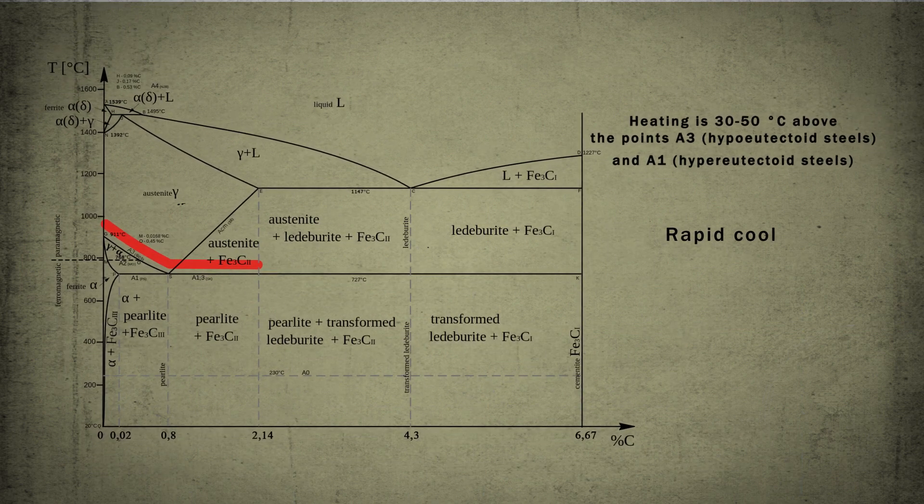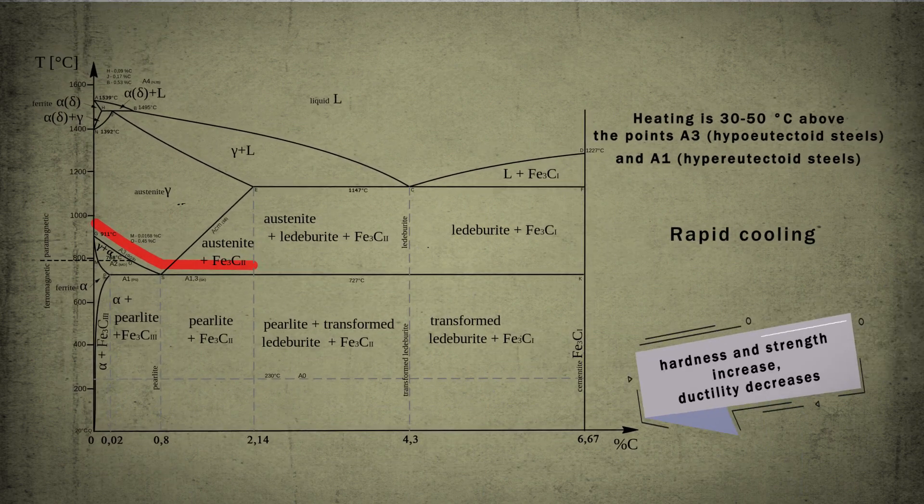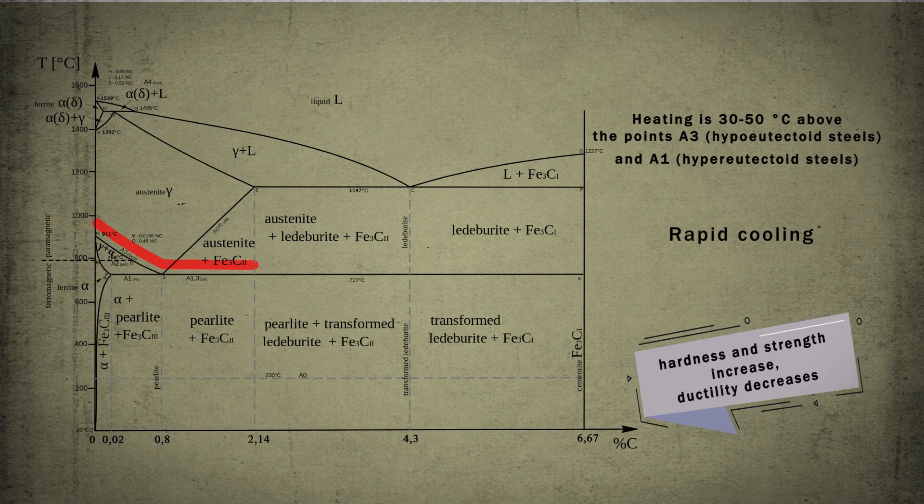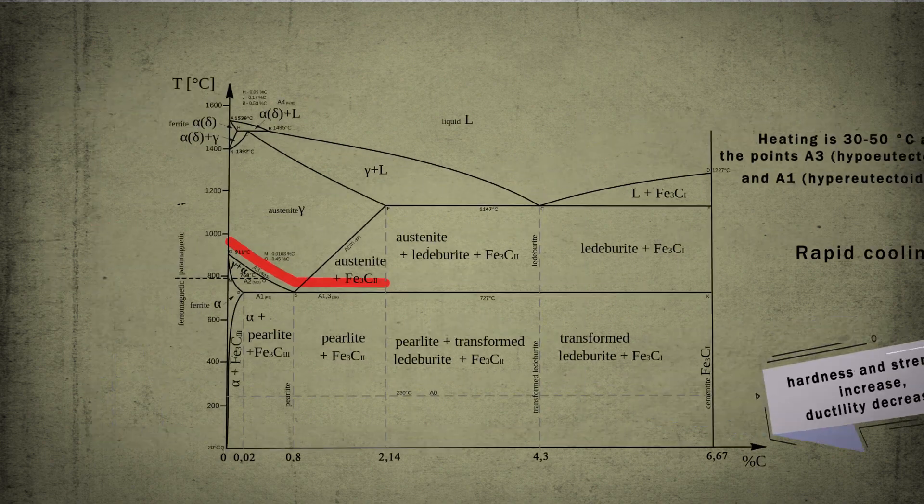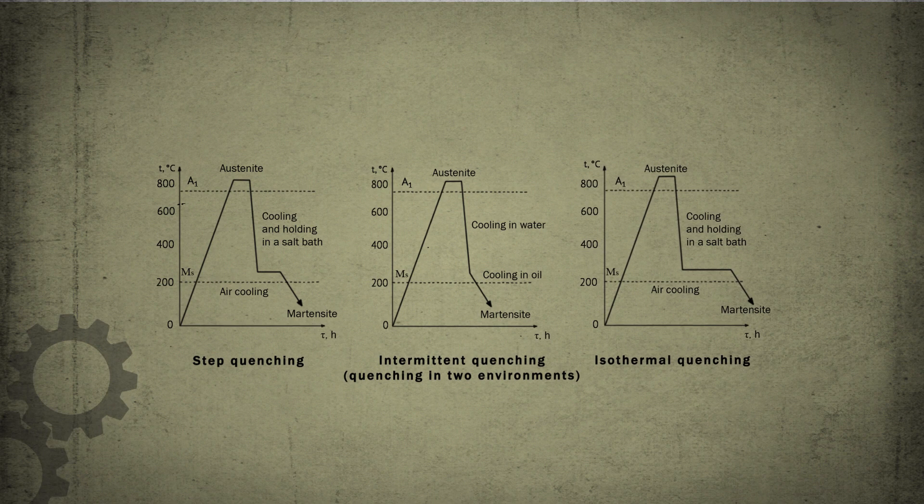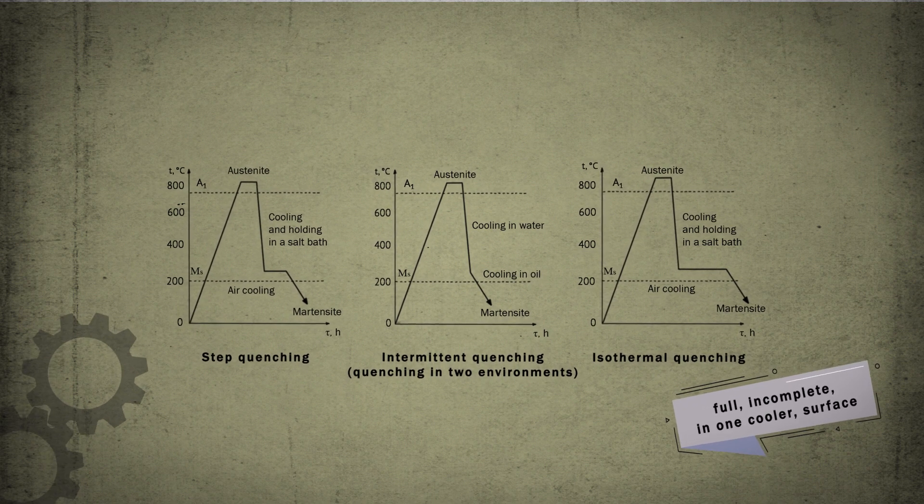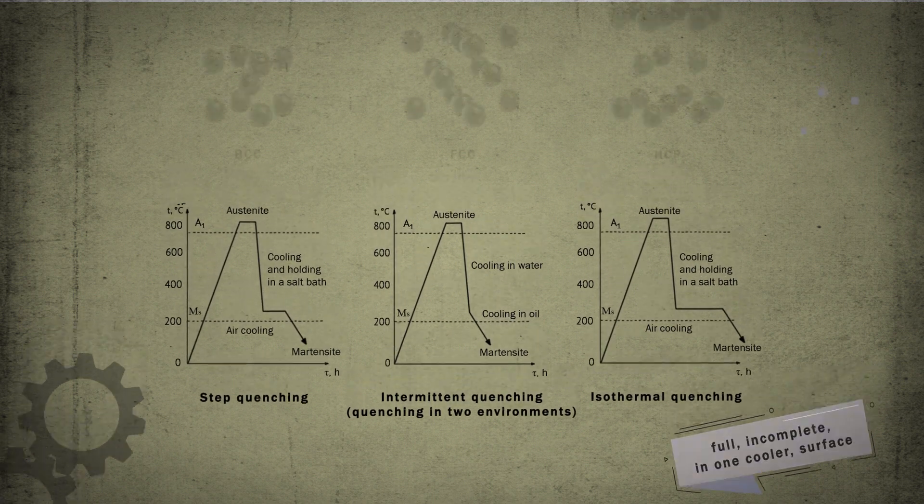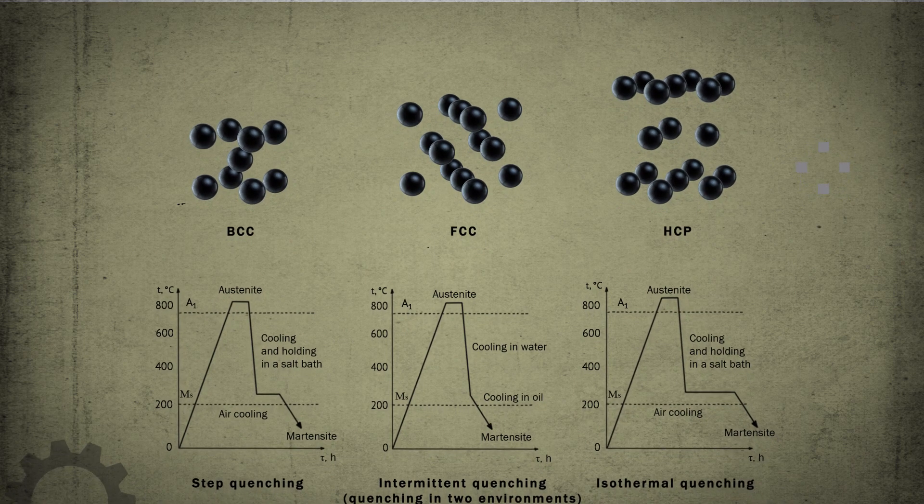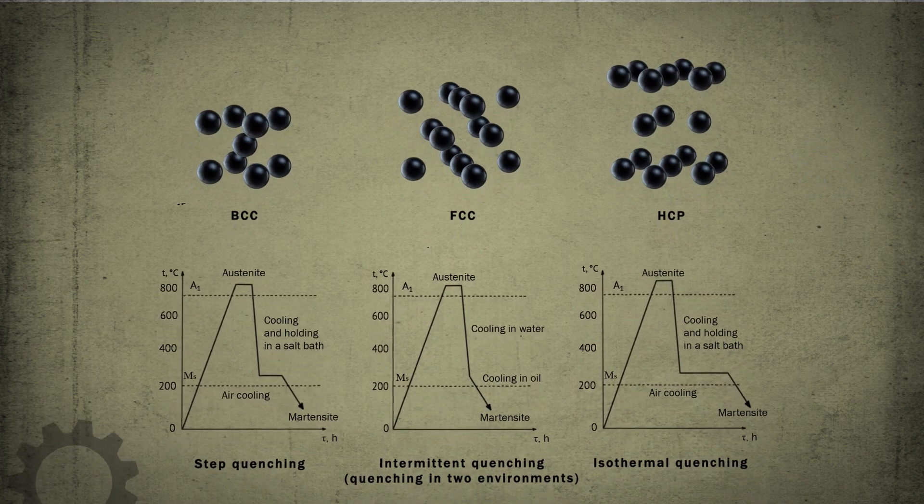As a result, the hardness and strength of the steel increase and the ductility decreases. Quenching leads to formation of supersaturated solid solutions and can be used for any metals and alloys in which the crystal structure tends to rearrange upon cooling.